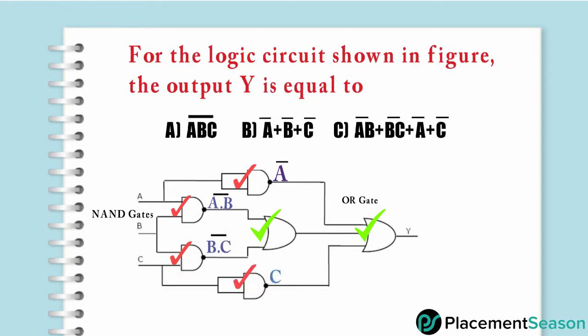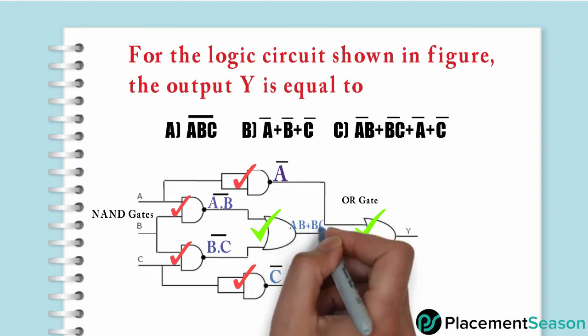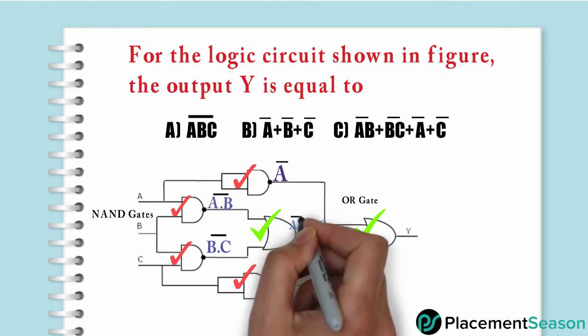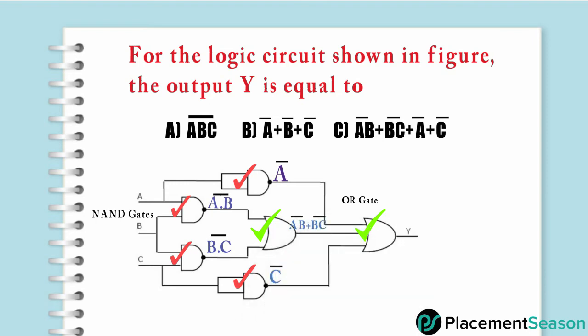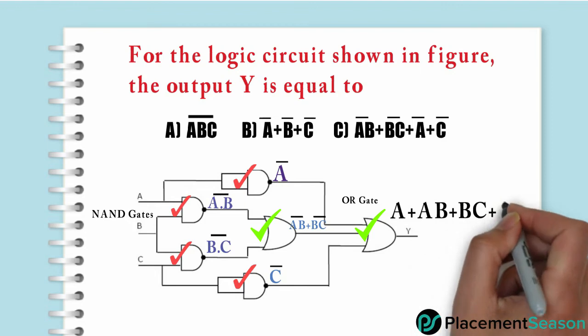For the first OR gate, there are inputs of A̅B̅ and B̅C̅, so output will be A̅B̅ + B̅C̅. And last, Y can be written as A̅ + A̅B̅ + B̅C̅ + C̅.